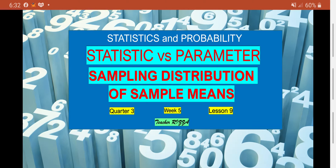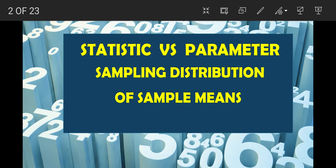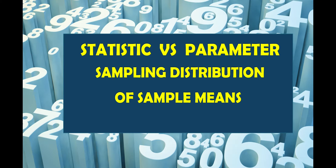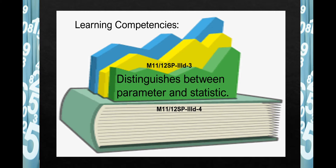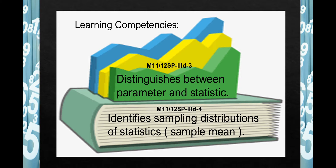Good day! This is Teacher Riza and this is our Lesson 9 for Week 5 of Quarter 3 in Statistics and Probability — Statistic vs. Parameter and Sampling Distribution of Sample Means. Our learning competencies for this lesson are distinguishing between parameter and statistic and identifying the sampling distribution of statistics, which is the sample mean.